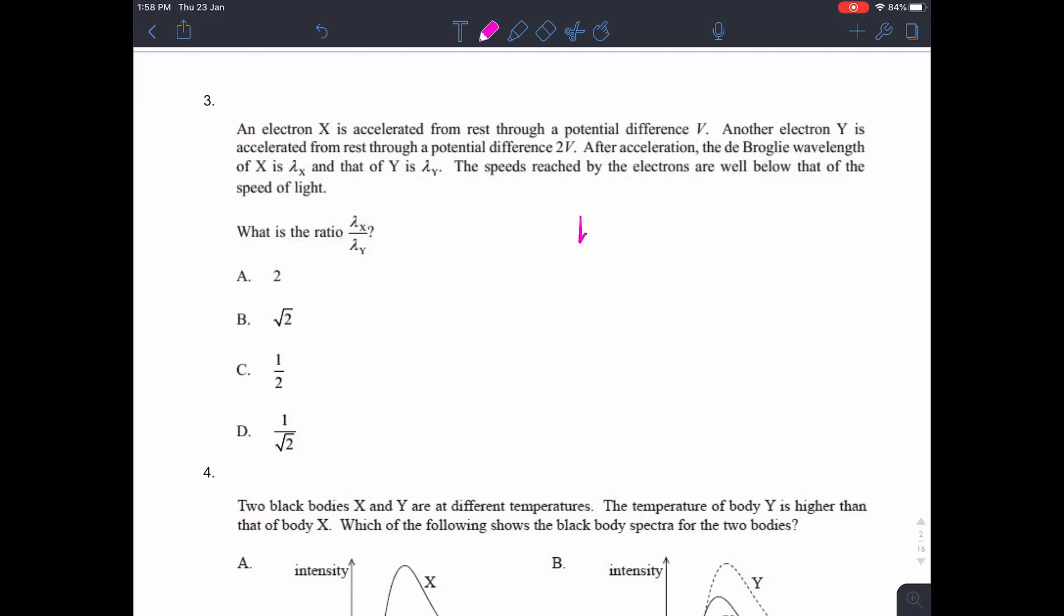So we know that the kinetic energy given to the electrons is the charge multiplied by the potential difference. And so we can therefore say that half times the mass times the velocity squared is EV, which rearranges to give you the velocity is the square root of 2EV over the mass. And in this case, we're talking about an electron, so the mass of an electron. If we simplify that a little bit, we can say that the velocity, therefore, is proportional to the square root of the voltage.